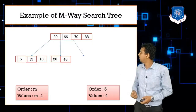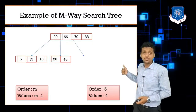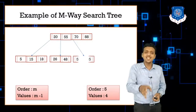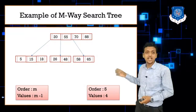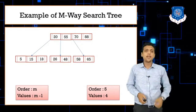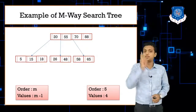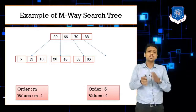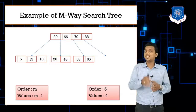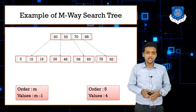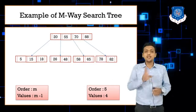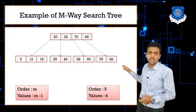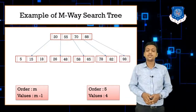The pointer between 55 and 70 must point to values greater than 55 and less than 70 — here the node contains 58 and 65. Since it's order five with five pointers, the pointer between 70 and 80 must point to values greater than 70 and less than 80, and values greater than 80 are on the rightmost side — that is 98.